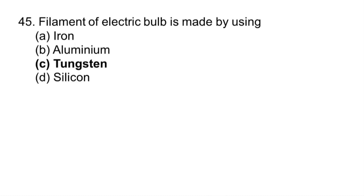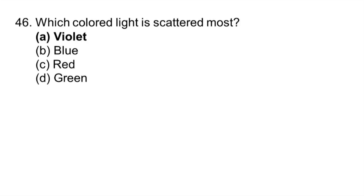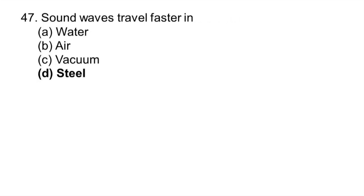Filament of electric bulb is made by using tungsten. Which colored light is scattered most? Violet. Sound waves travel fast in steel.